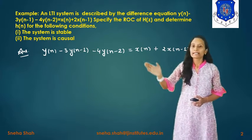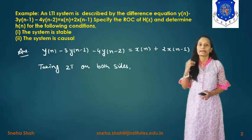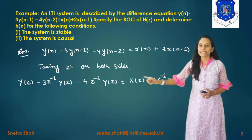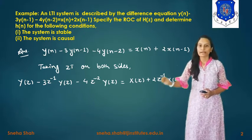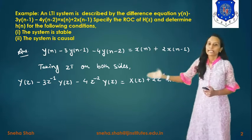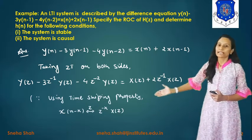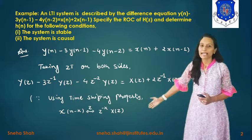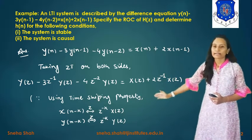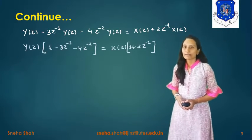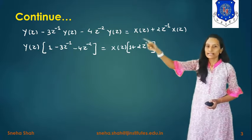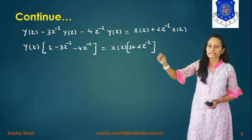Taking the Z-transform on both sides and applying the time-shifting property, this term converts to: Y(z) - 3z⁻¹Y(z) - 4z⁻²Y(z) = X(z) + 2z⁻¹X(z). Here we have applied the time-shifting property: x(n-k) has Z-transform z⁻ᵏX(z), and y(n-k) has Z-transform z⁻ᵏY(z). So the equation becomes Y(z)[1 - 3z⁻¹ - 4z⁻²] = X(z)[1 + 2z⁻¹].